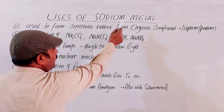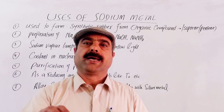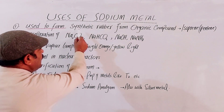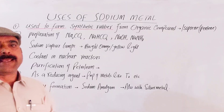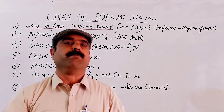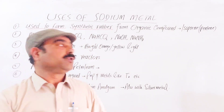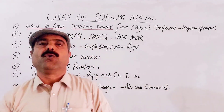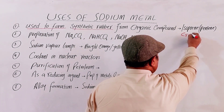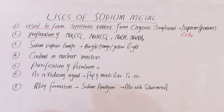Sodium metal is used to form synthetic rubber from organic compounds. The organic compound used is isoprene, an unsaturated hydrocarbon with the molecular formula C5H10. Sodium metal is involved in the industrial chemical process to produce synthetic rubber.